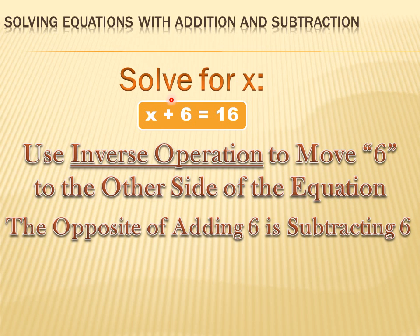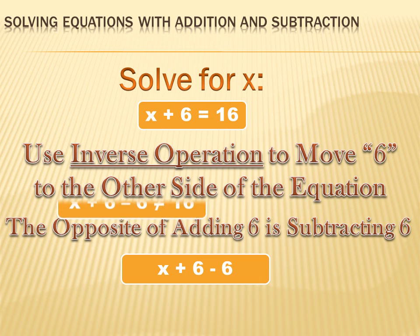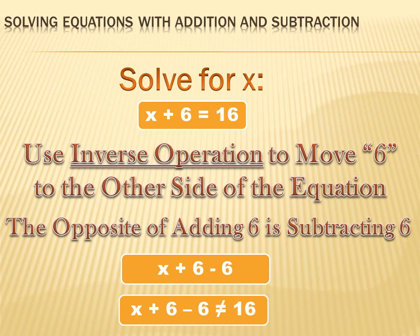If you subtract 6 from x plus 6, you've got x plus 6 minus 6. Well, plus 6 minus 6 is 0, so it changes to x plus 0, and x plus 0 is equal to x. But wait — it originally said x plus 6 equals 16. If x plus 6 equals 16, then x can't equal 16, because 16 plus 6 is 22 and 22 doesn't equal 16. So unfortunately, x plus 6 minus 6 does not equal 16 and we haven't solved the problem yet.